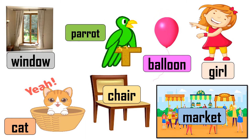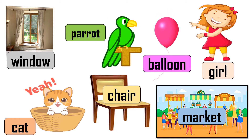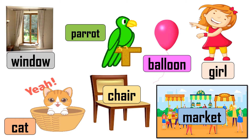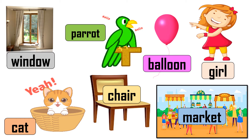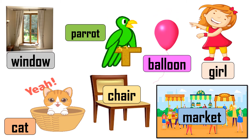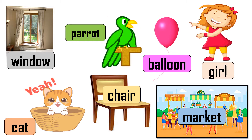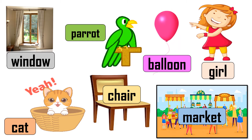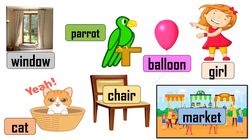Once again we will read the names of all these things: window, cat, parrot, chair, balloon, girl, and market. Now you must be thinking — why has Snehal teacher chosen such different things? Let's see why.